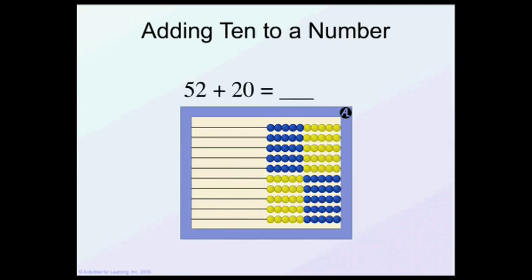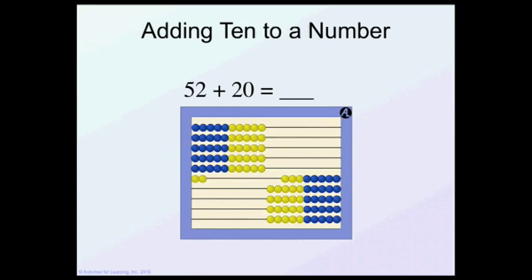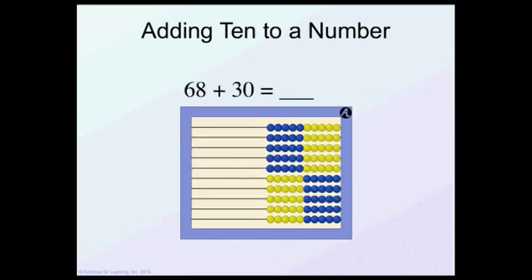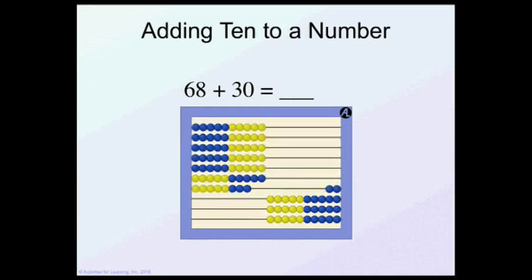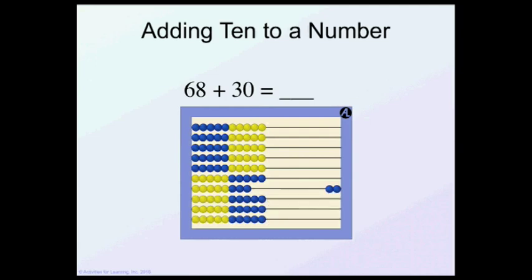Let's add 10 to a number. I'm going to do 52 plus 20. So 5 ten, 2, 52. And 20 more, I'm just going to scoot them over right here. Can you see the answer? You have 7 ten or 70 and 2 more. 72. Let's do 68 plus 30. So I'm going to put on 6 ten and 8 more. I can see my answer is going to be 9 ten and 8 more. So my answer is going to be 98.